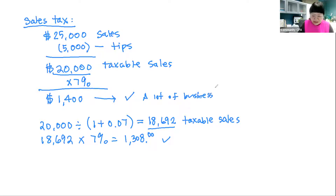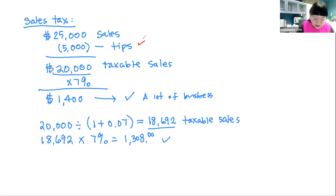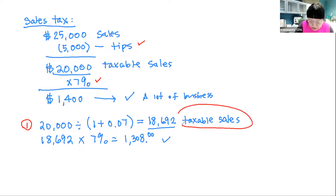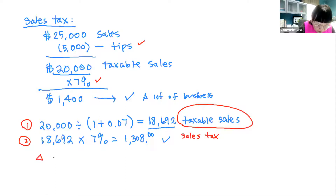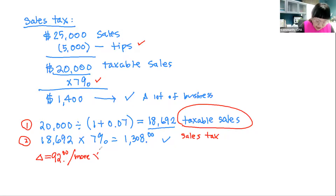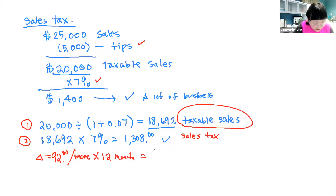When businesses don't have a system to calculate sales tax, they do it themselves: they forget to subtract tips, then just multiply. The real steps are: number one, calculate taxable sales; number two, calculate sales tax. Because of this error, you might be paying $92 a month more than you should. Over 12 months, that's $1,104 overpaid — free money.